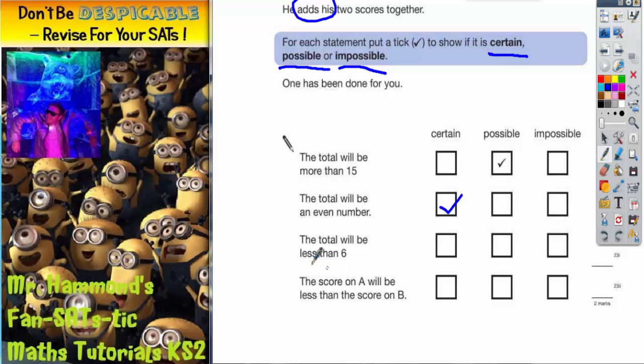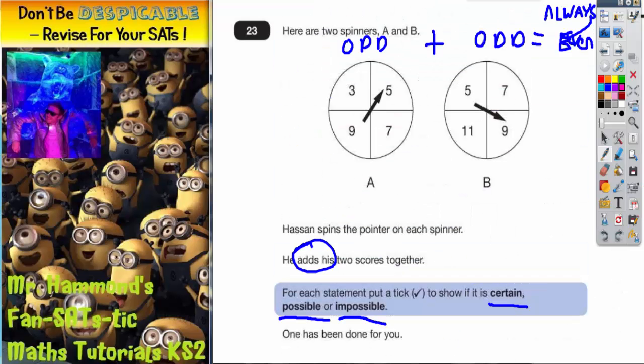The next statement says the total will be less than 6. So if we go back up, let's try what would happen if we get the two smallest numbers. Well the smallest number on A is 3 and the smallest number on B is 5. If we add those together we'd have 3 add 5 which would give us a total of 8, and that's the smallest total.